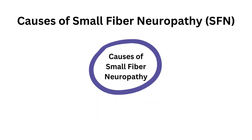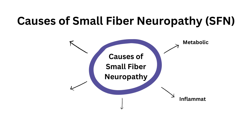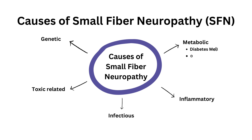Causes of Small Fiber Neuropathy are categorized into five main groups: metabolic, inflammatory, toxic-related, infectious, and genetic. Metabolic causes include diabetes mellitus, obesity, high blood pressure, and dyslipidemia.